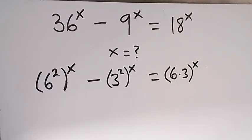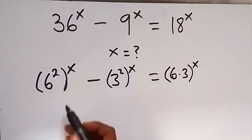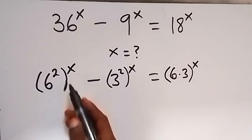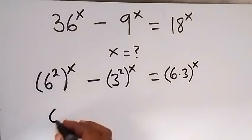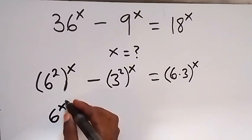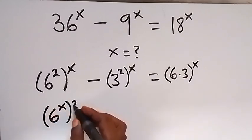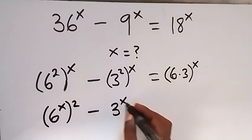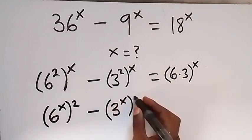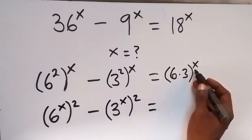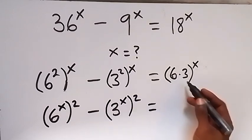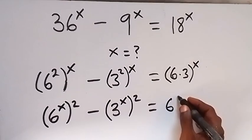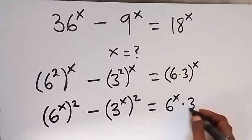In the next step, we apply the law of indices. Since we are multiplying, we can interchange the power, and this will be 6 raised to power x, then squared, minus 3 raised to power x, then squared. On the right side, the power of x distributes, giving us 6 raised to power x times 3 raised to power x.